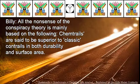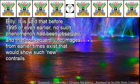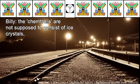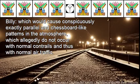All the nonsense of the conspiracy theory is mainly based on the following. Chemtrails are said to be superior to classic contrails in both durability and surface area — not normal contrails, but modified by toxic chemicals, which is why they would spread so wide and be long-lasting. It is said that before 1995 or even earlier, no such phenomenon had been observed, and consequently no images from earlier times exist showing such new contrails. Contrary to normal contrails of aircraft exhaust gases, chemtrails are not supposed to consist of ice crystals, but of different chemical substances, which would cause conspicuously parallel and chessboard-like patterns in the atmosphere, allegedly not occurring with normal contrails and normal air traffic.